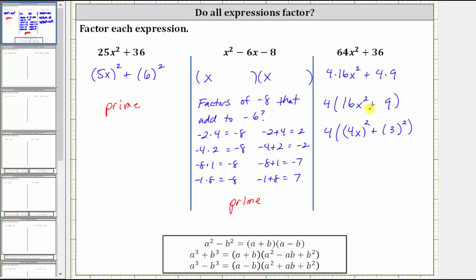But because we did factor out the four, it is factorable. It just doesn't factor in the way that we thought it might. So the final factored form is four times the quantity 16x squared plus nine.